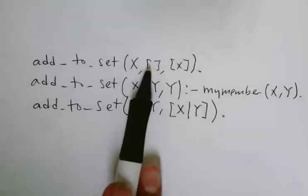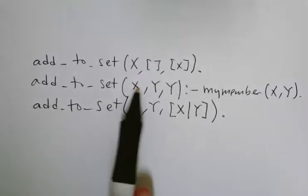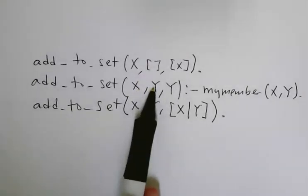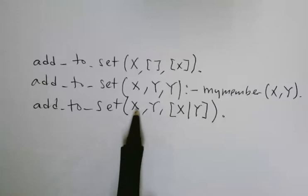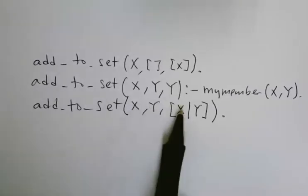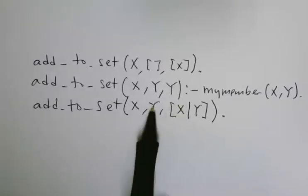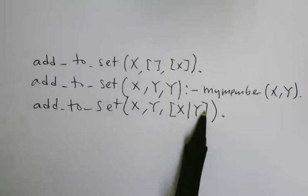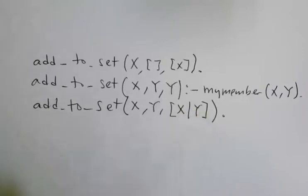So, if this fails, that means the list is not empty and X is not a member of Y. Then, the answer will be, if I'm adding X to this list, then I'm putting this in the head, and this will be the rest of the list. So, this is very nice, isn't it? Okay, so we will continue with more problem practice soon.